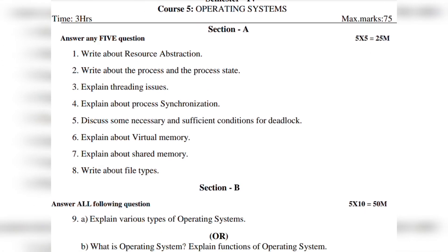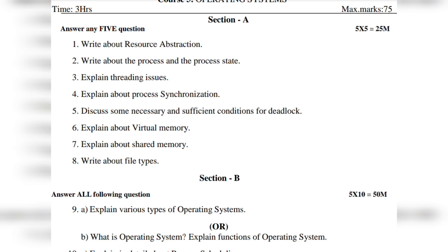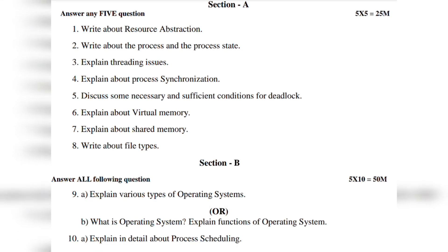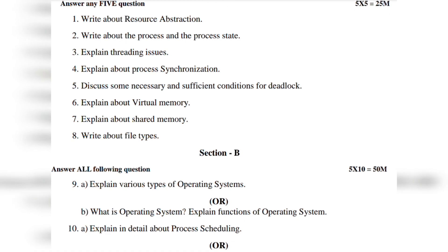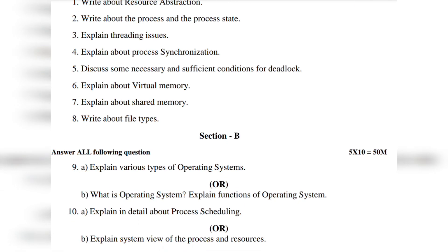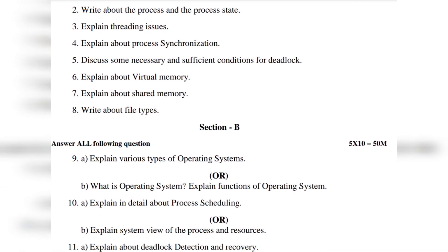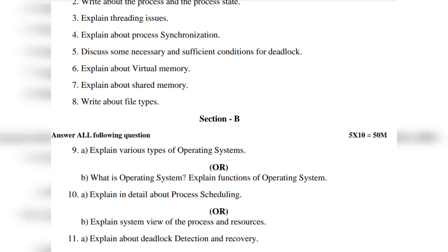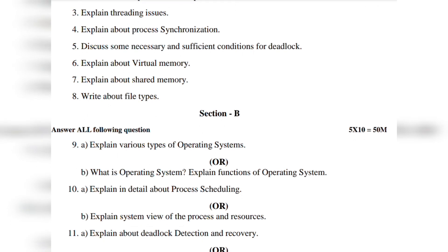Now this is the fourth section. Ninth one, explain virtual memory and various types of operating systems. Another ninth one, what is an operating system? Explain functions of operating system. Tenth one, explain in detail about process scheduling. Another tenth one, explain system view of the process and resources. Eleventh one, explain about deadlock detection and recovery.